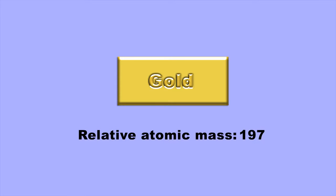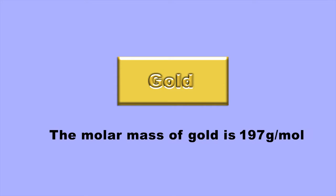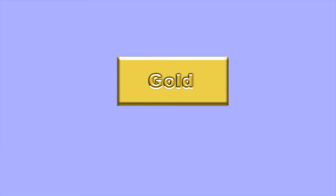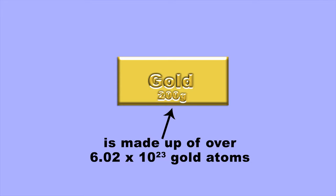Gold has a relative atomic mass of about 197, so gold has a molar mass of 197 grams per mole. This means that 200 grams of gold contain more than 6.02 times 10 to the power of 23 individual gold atoms.